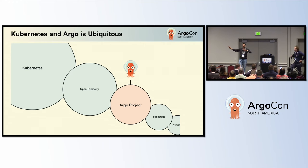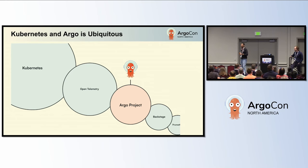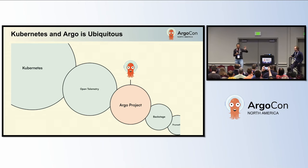Argo is the third largest and fastest growing project in the CNCF. It is also the fourth largest in the Linux Foundation, for those that don't know. So it's kind of humbling to know that being part of a project, contributing to a project that is also mentioned in the same breath as Kubernetes and the Linux kernel — which is, to me, kind of amazing.